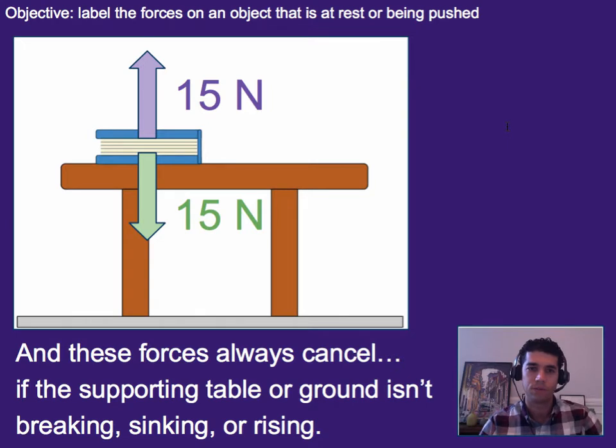Now these forces usually cancel out and they almost always do unless the supporting table or ground or whatever it is is breaking, sinking, or rising. In which case the force due to gravity or weight might be bigger or smaller than the force from the table or the ground.